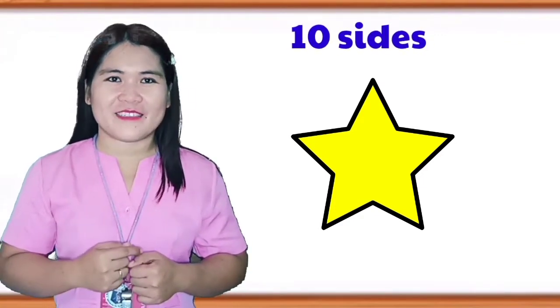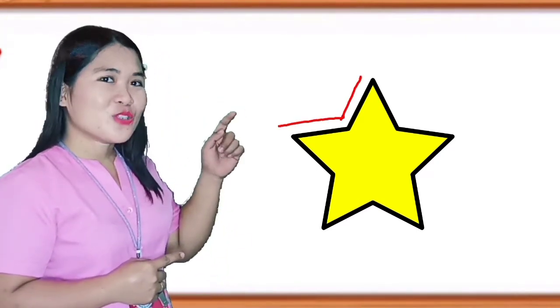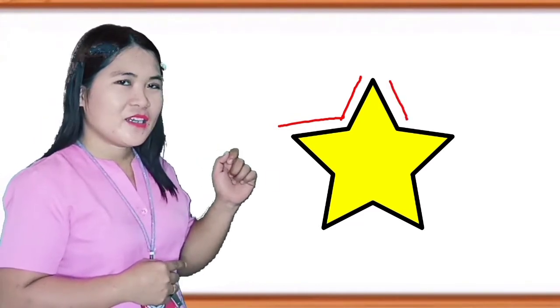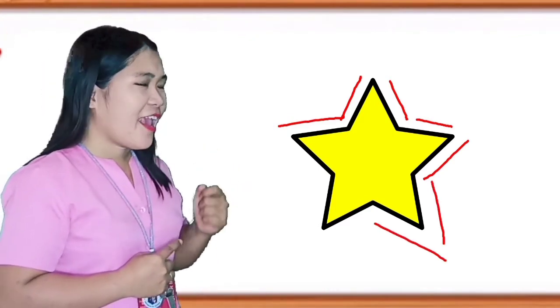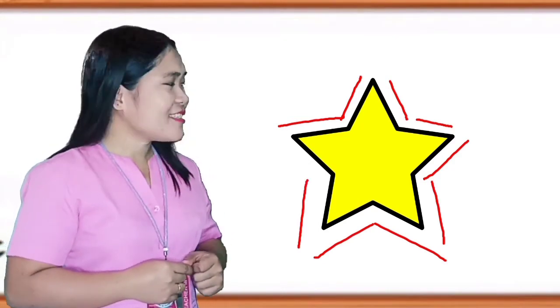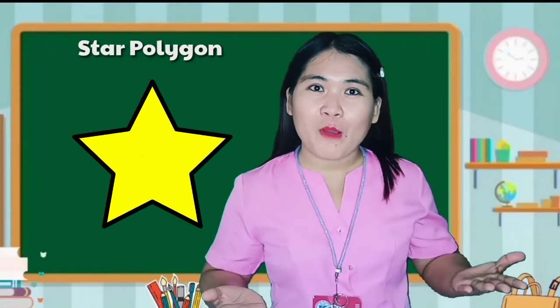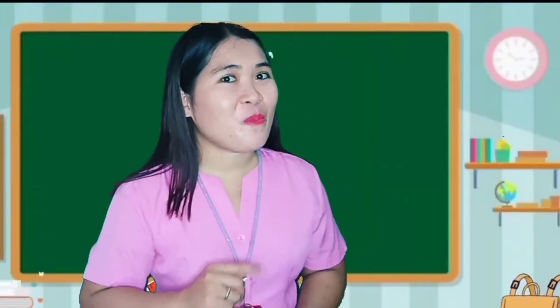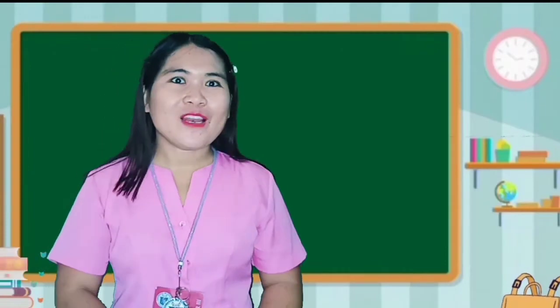How many sides are there in a star? Correct! It is 10 sides. Now let us count: 1, 2, 3, 4, 5, 6, 7, 8, 9, 10. A star has 10 sides. Did you know that a star is a special type of polygon? That is a star polygon. Do you want to know more about polygons? Just stay where you are and let us learn about polygons.